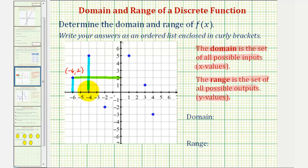Next we have the point (-4, 5), therefore negative four is in the domain, and five is in the range.